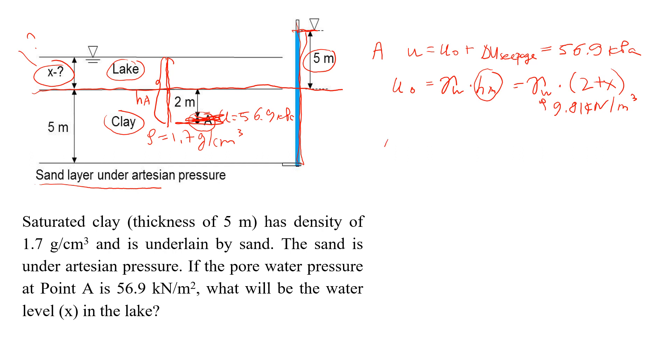Now we're going to find this additional pore pressure that comes from the seepage at point A times unit weight of water. This component we're going to find from the definition of the hydraulic gradient. Hydraulic gradient is delta H divided by L. So that's the only formula that we use to define hydraulic gradient.